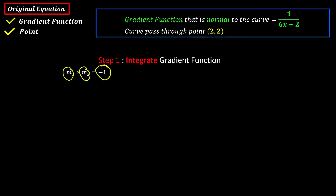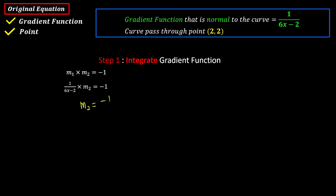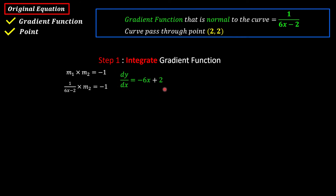Let m1 be the normal gradient, which is 1 over 6x minus 2. Then m2, the gradient parallel to the curve, equals negative 1 divided by (1 over 6x minus 2). When dividing by a fraction, we flip and multiply, giving m2 equals negative 6x plus 2. So the gradient function parallel to the curve is negative 6x plus 2. Now we integrate: the equation of the curve is the integration of negative 6x plus 2 with respect to x.